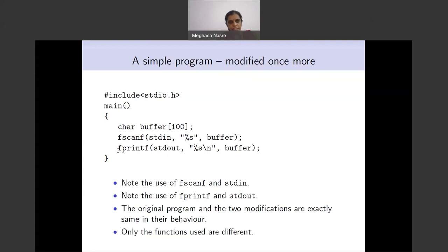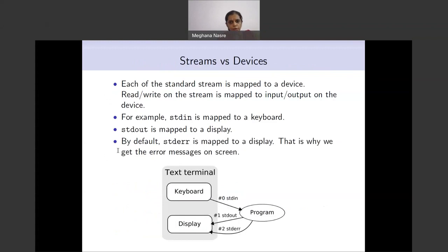Having said this, we have introduced the notion of streams and know how the usual input and output streams behave and how to access them. The standard error is by default mapped to the screen or monitor, and therefore error messages are also written to the monitor. The standard input is mapped to the keyboard. Now with this, what we would like to do is read and write from a file.